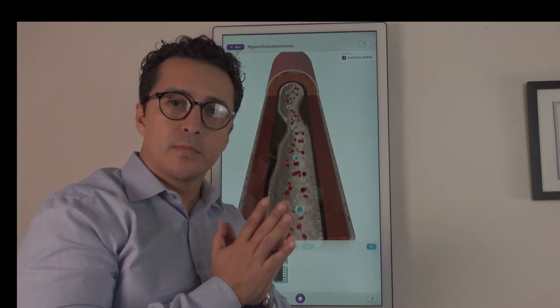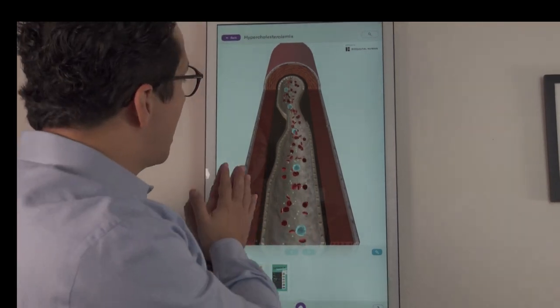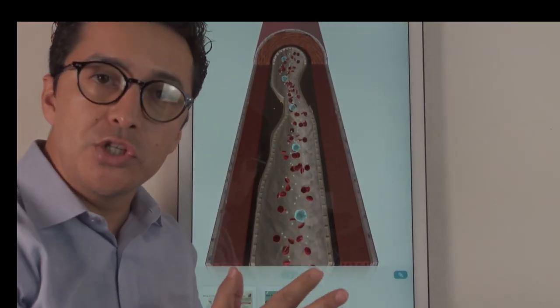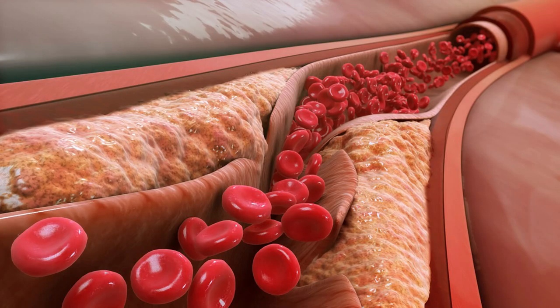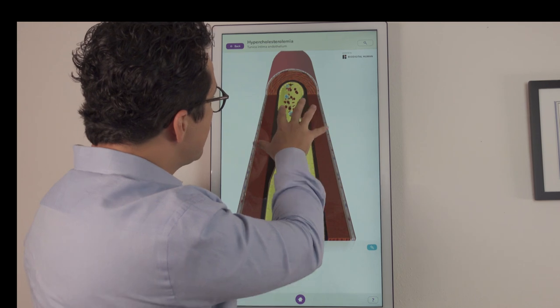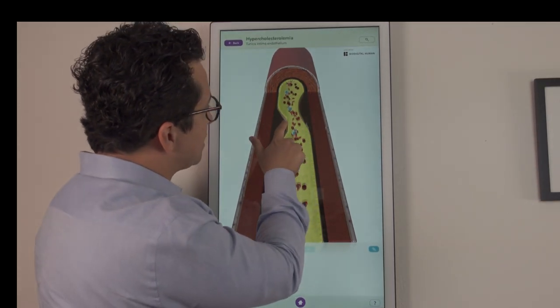Now what happens sometimes when the LDL is too much, it gets under the blood vessel wall. I'm going to here show you how this cholesterol, the bad LDL, the bad cholesterol, the LDL gets into under your blood vessel wall and creates the accumulation.